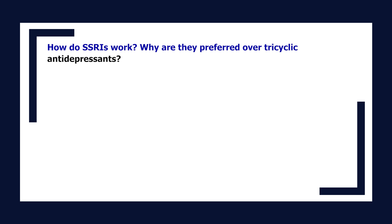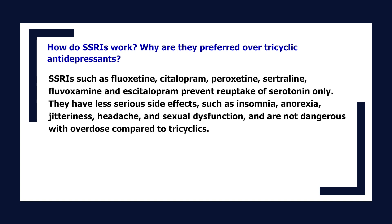How do SSRIs work, and why are they preferred over tricyclic antidepressants? SSRIs such as fluoxetine, citalopram, paroxetine, sertraline, fluvoxamine, and escitalopram prevent reuptake of serotonin only. They have less serious side effects such as insomnia, anorexia, jitteriness, headache, and sexual dysfunction, and are not dangerous in overdose compared to tricyclics.